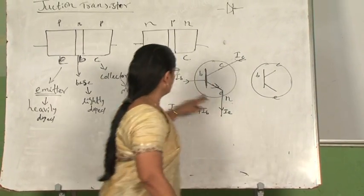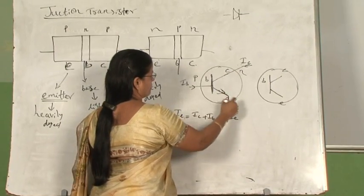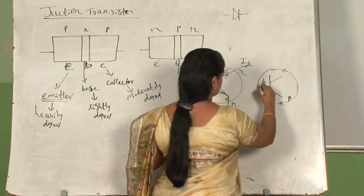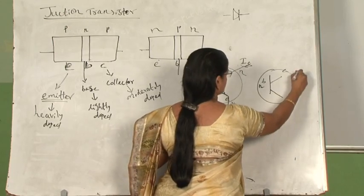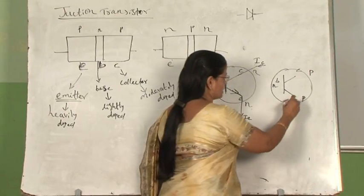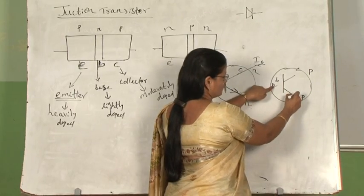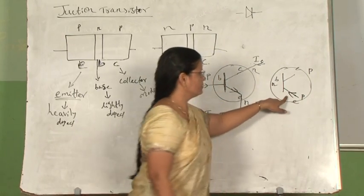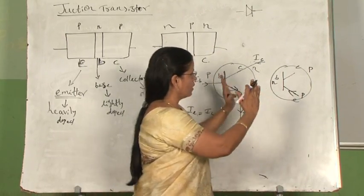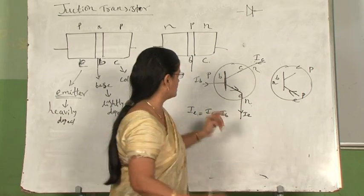This is the NPN transistor circuit symbol. For the PNP transistor, the arrow is still on the emitter section but it points inward toward the N section — which is the base in a PNP device. From the direction of the arrow alone you can identify whether it is an NPN or PNP transistor.